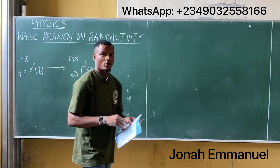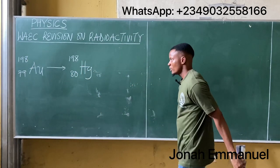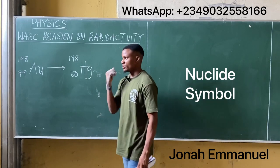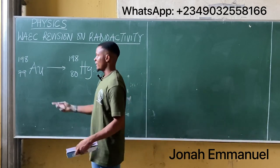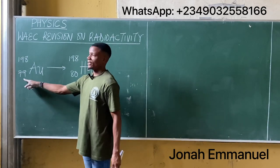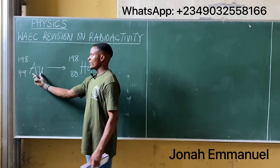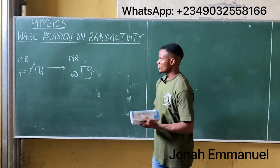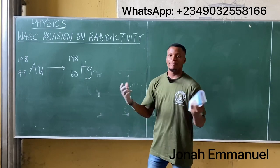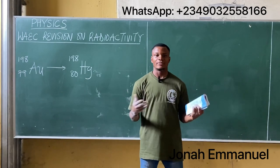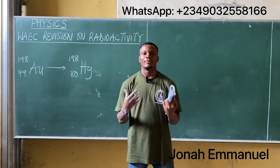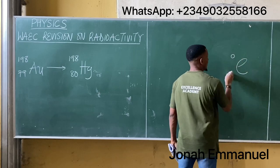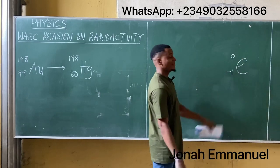Let's get this done. First of all, this is called a nuclide symbol. The nuclide symbol is a symbol of an element showing its atomic number and mass number — nuclide symbol for gold, nuclide symbol for mercury. We're asked to find how many beta particles are emitted. Beta particles are simply electrons having an atomic number of minus one and a mass number of zero.